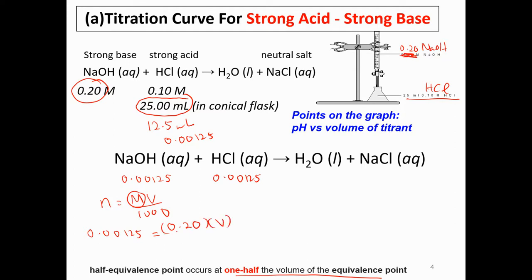Solving for volume, the volume of sodium hydroxide equals 6.25 ml. This means that when 6.25 ml is added to 25 ml of hydrochloric acid, the half-equivalence point will be reached.